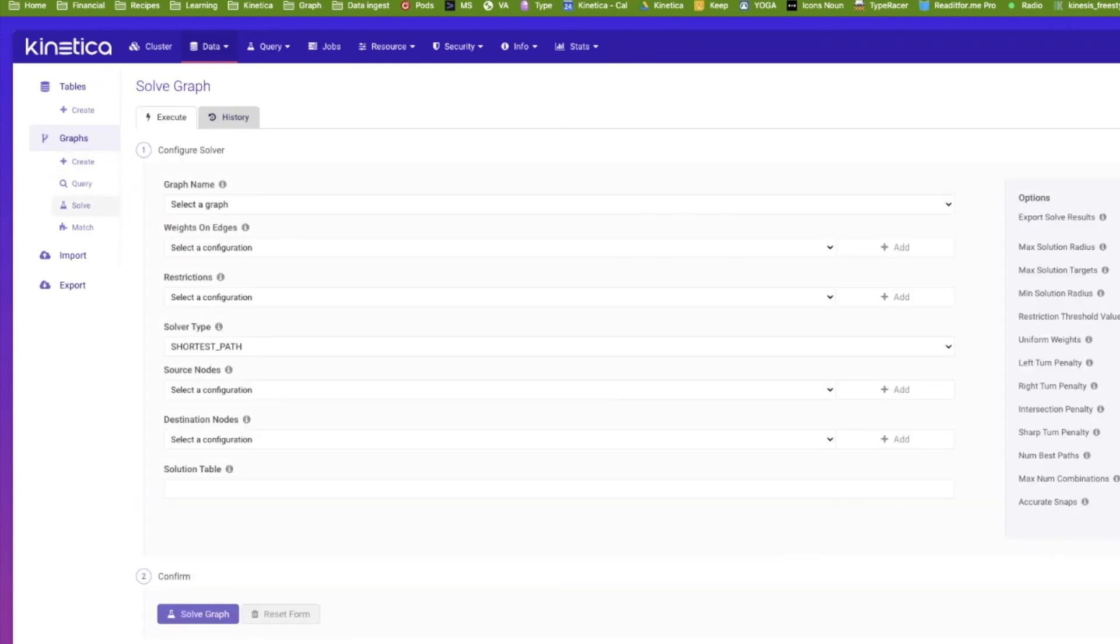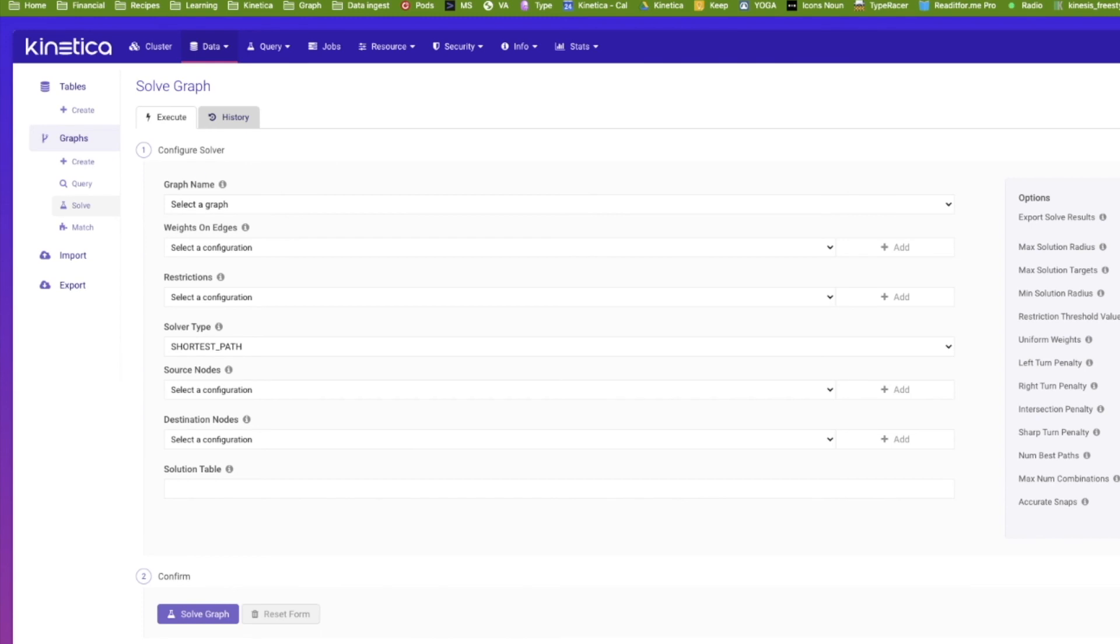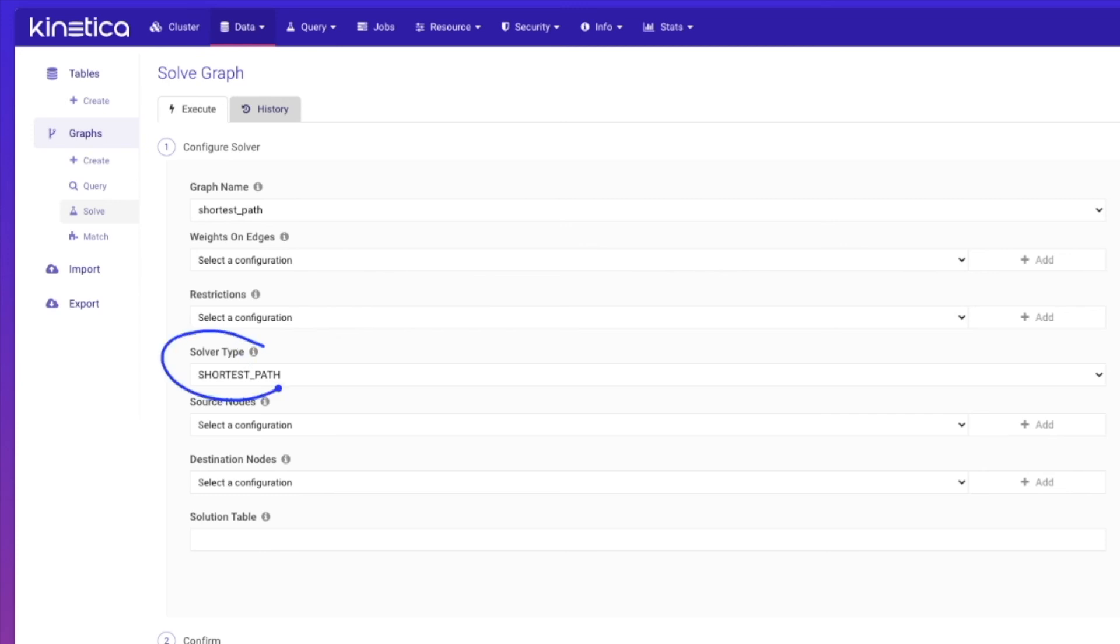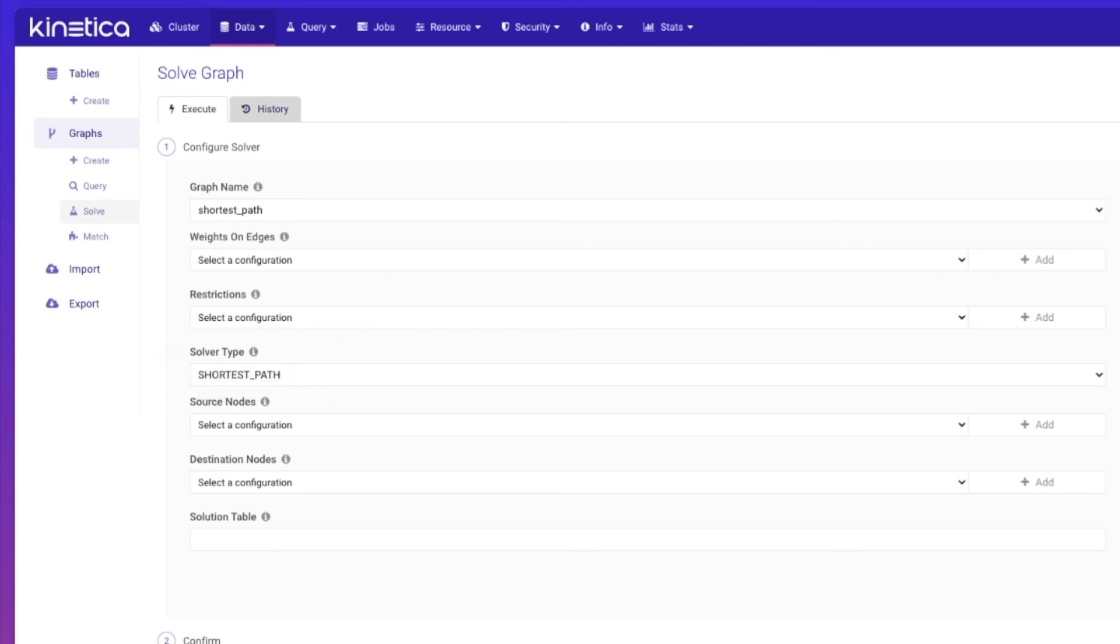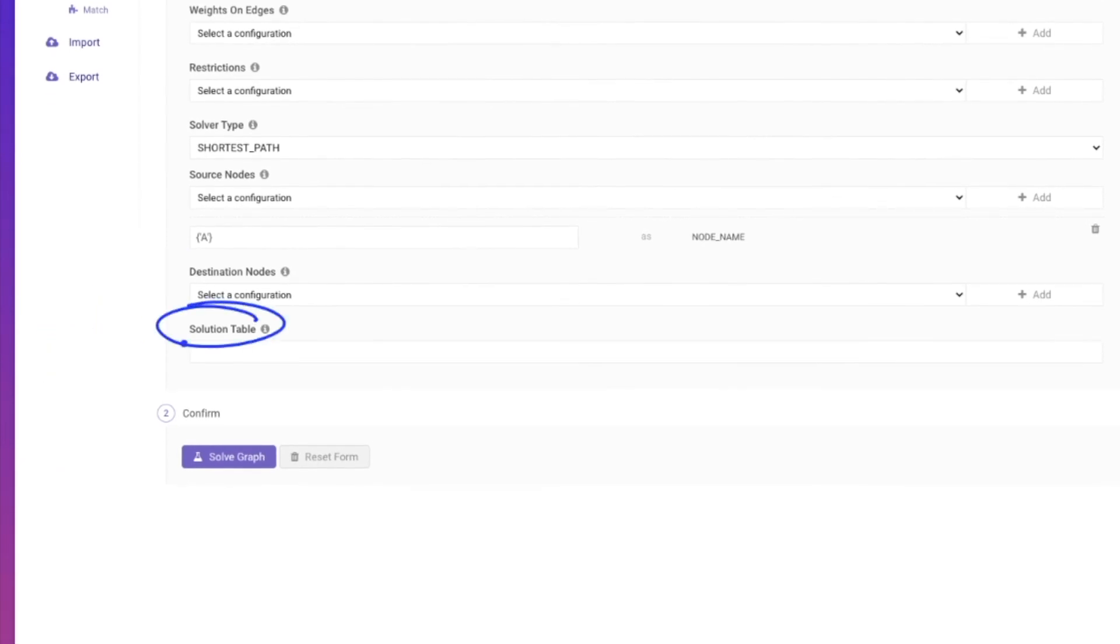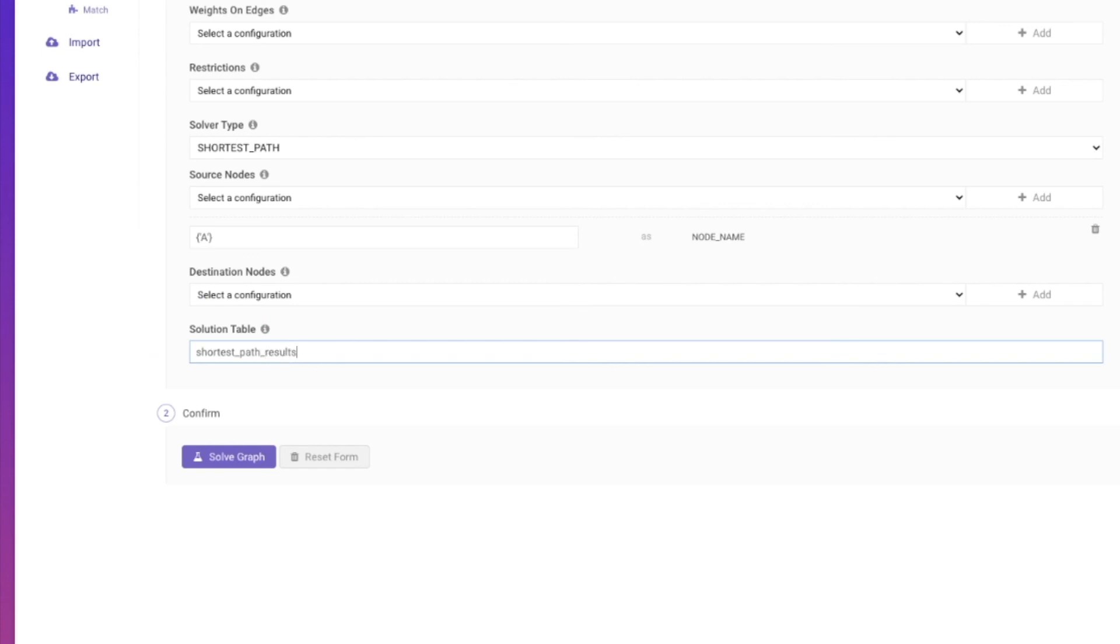Let's go to the solver tab to create the API request for the solver. Let's select the graph that I've already created. The default solver is already set as the shortest path, so we don't have to change that. Next, let's set A as the starting node for the solver. Let's also assign a name for the results table. Now we are ready, so let's solve this graph.